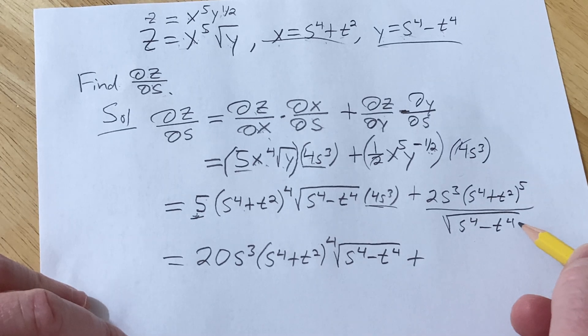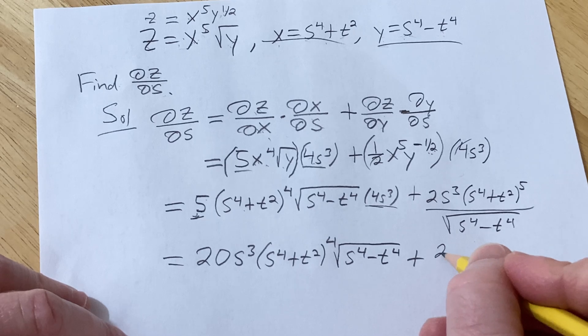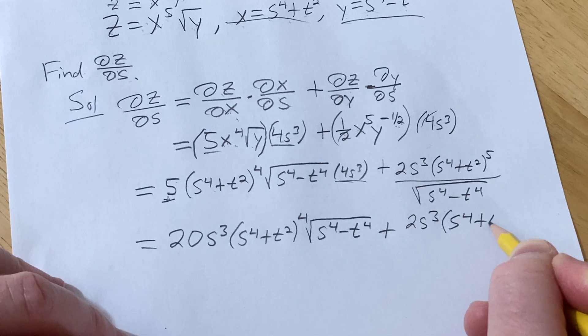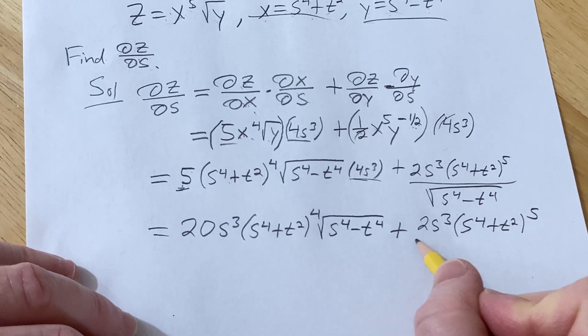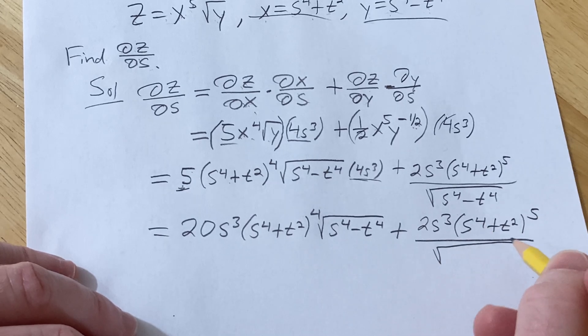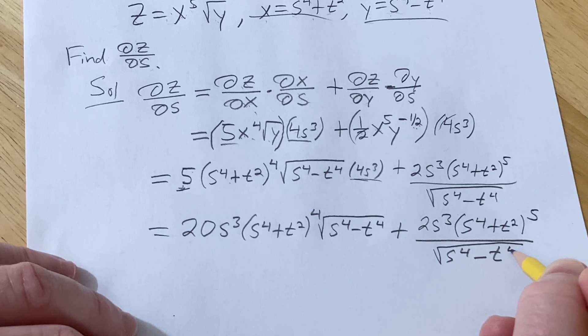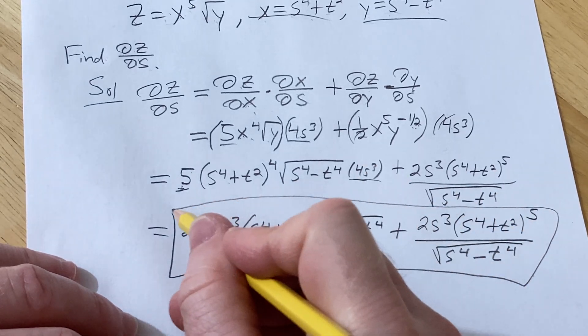So plus, you could rationalize, some people like to do that but I'll leave it like this. So this will be plus 2s cubed, parentheses s to the fourth plus t squared to the fifth, and all of this is over square root of s to the fourth minus t to the fourth.